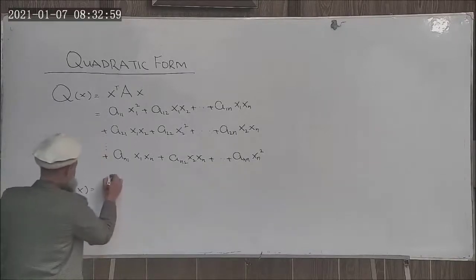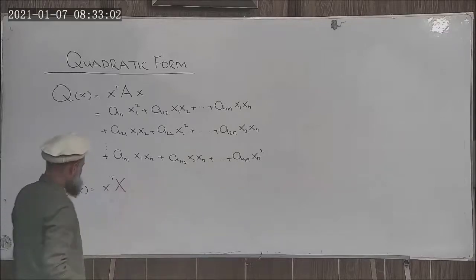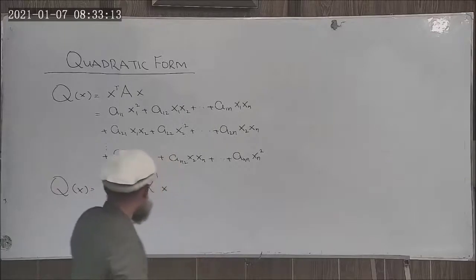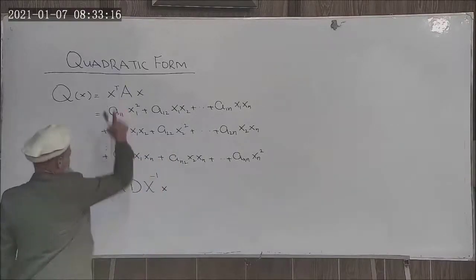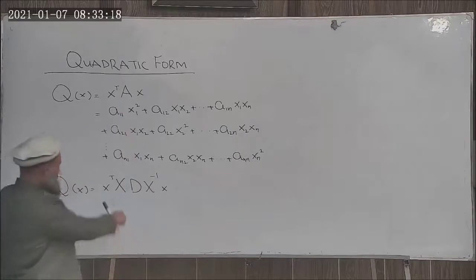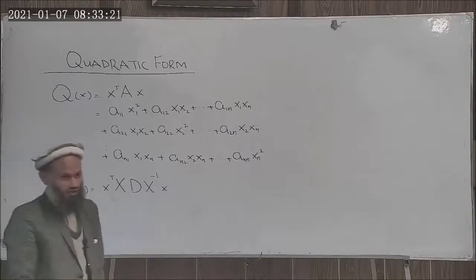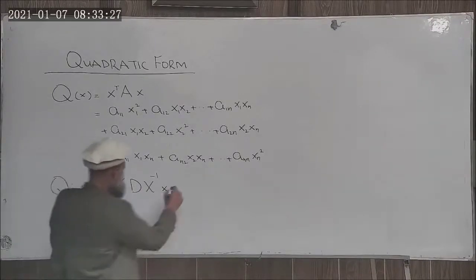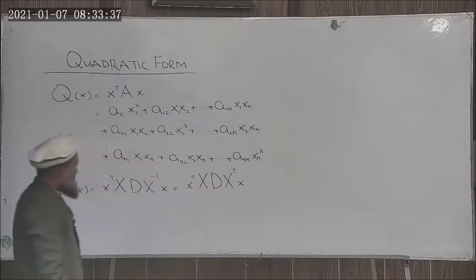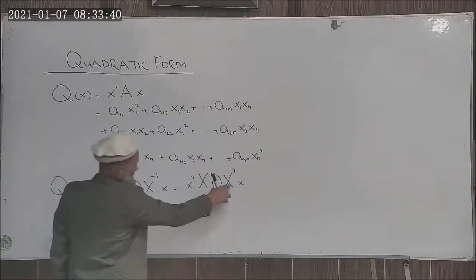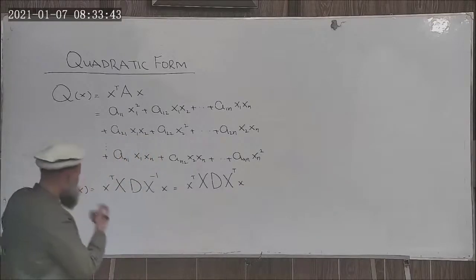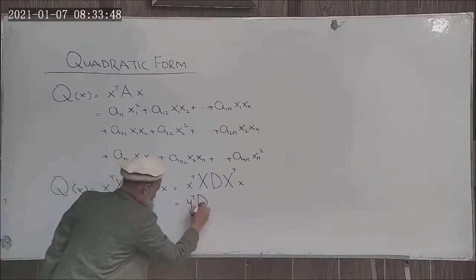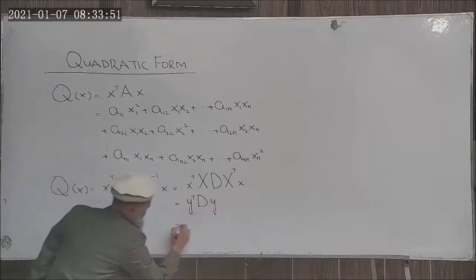Furthermore, we can transform this quadratic form to principal axis. If A is diagonalizable, it can be written into this form. Since A matrix is symmetric, this capital X matrix will be an orthogonal matrix, and therefore X inverse equals X transpose. If we define X transpose times x to be equal to y, then this expression is y transpose D y.